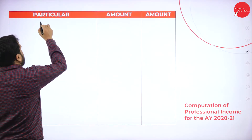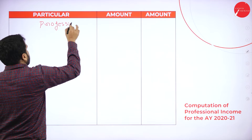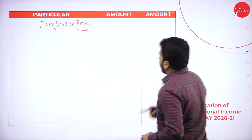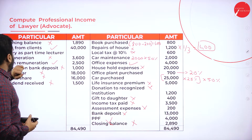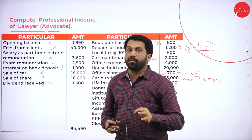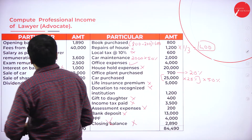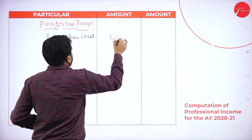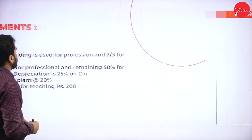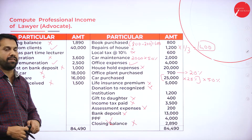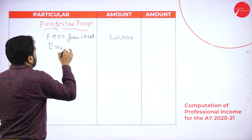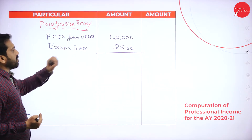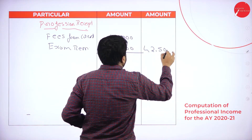Now I will go to the answer. First we will go for professional receipts. Under professional receipts, we have fees from client and exam remuneration — these two are your professional receipts. Fees from client: Rs.40,000. Exam remuneration: Rs.2,500. Total professional receipts: Rs.40,000 plus Rs.2,500 equals Rs.42,500.